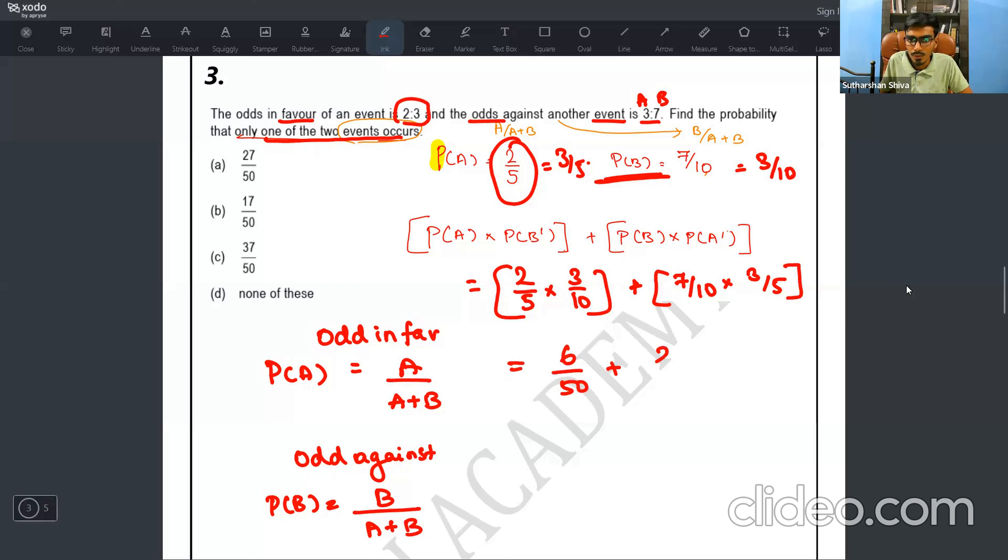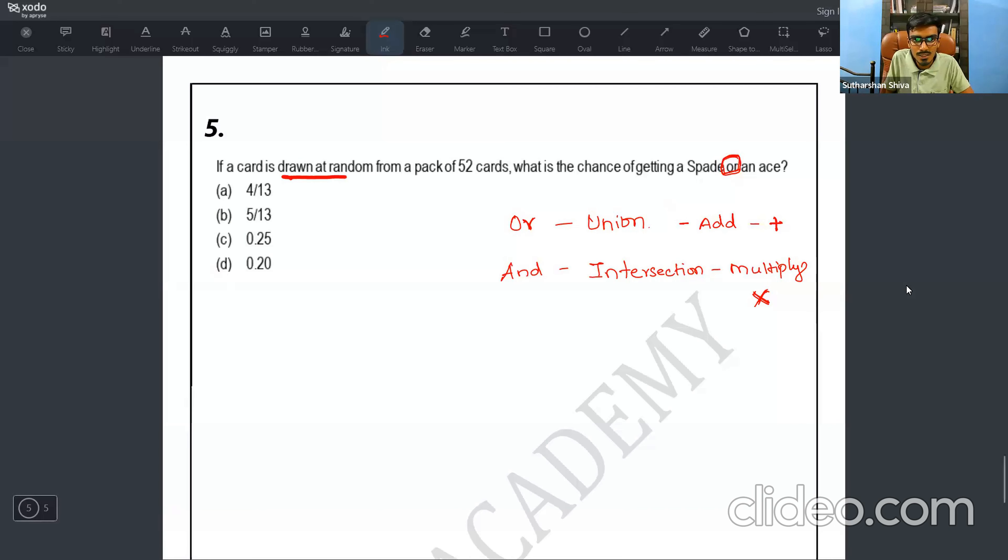Then we'll go to the fourth one. A, B, C are mutually exclusive and exhaustive events. The formula direct property is P of A plus P of B plus P of C is equal to one. So answer is option B.